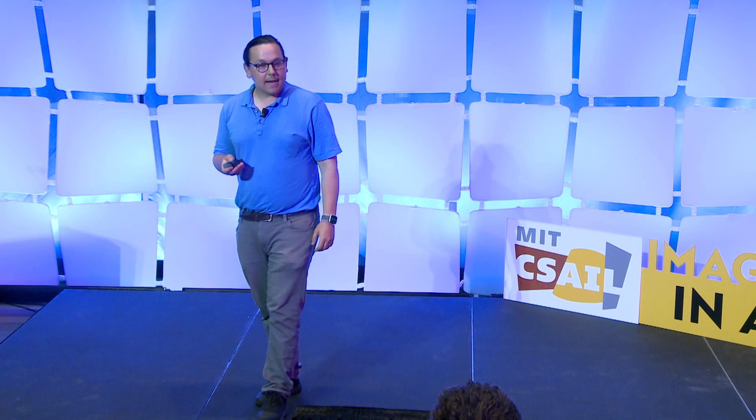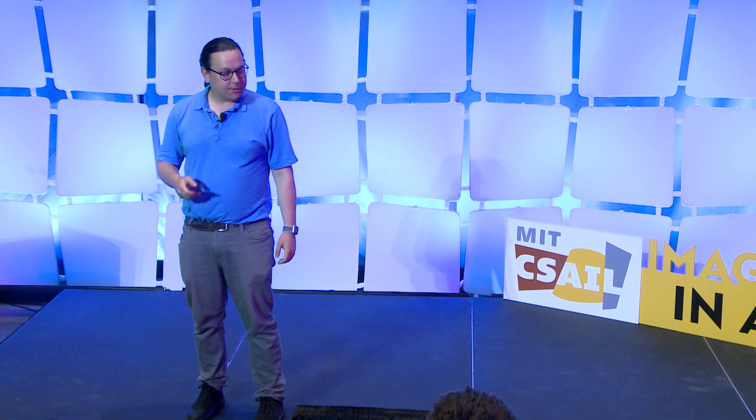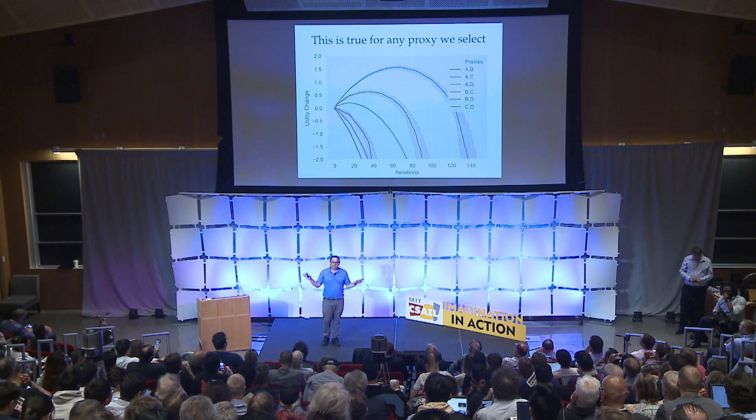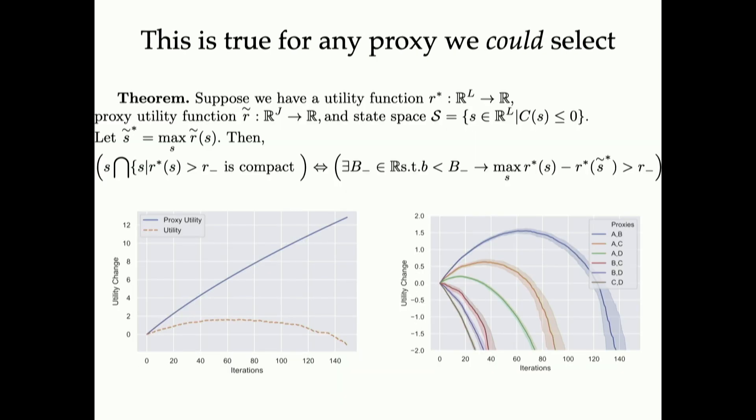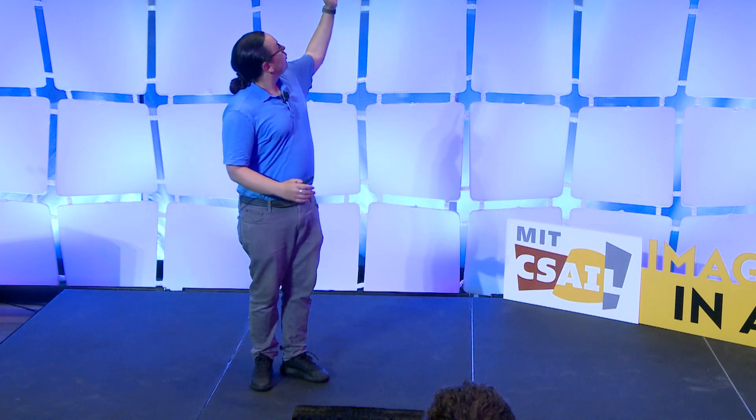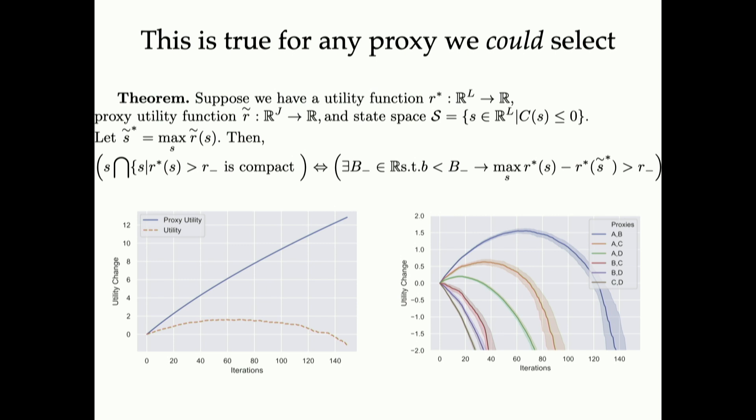And what's interesting is that I didn't cherry pick this set of options. Actually, for any proxy you can select in this toy problem, the same property happens. And we're able to show that this is not just this individual problem, but actually for a really broad category of problems. If you have these shared resources and incomplete goals, you see this consistent property of true utility going up and then falling off.